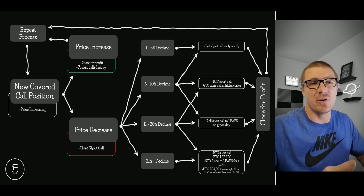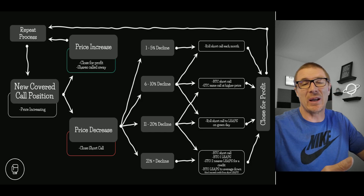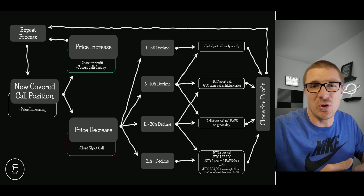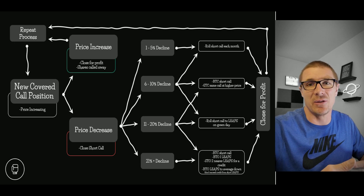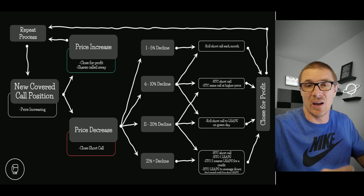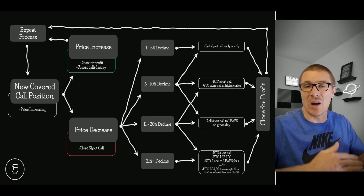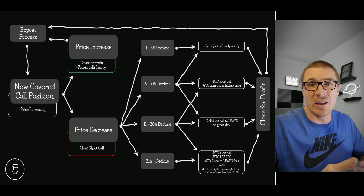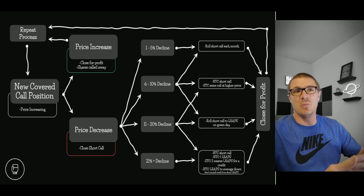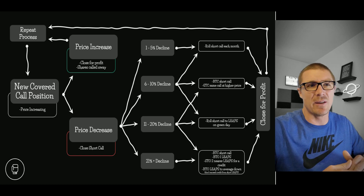If it's a larger decline — eleven to twenty percent — I'd like to roll the short call out to a LEAP option to collect even better premium. You may only get fifty cents on the near month call, but you may be able to get two dollars and fifty cents if you roll it out to four hundred-plus days. The idea is to take that premium that doesn't exist on the near month because of the decline at your strike price. You always want to maintain a strike price above your cost basis. I try to go for about five percent per month, and sometimes you just have to roll it out to that LEAP option.